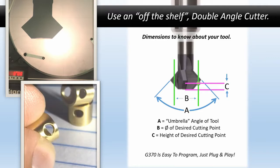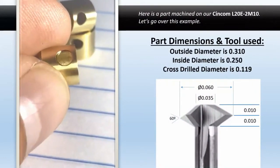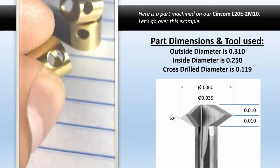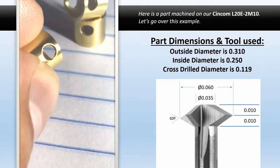G370 is easy to program and just plug and play. Part dimensions and tool used: outside diameter of this part was .310, inside diameter was .250, cross drill diameter was .119. These are all the parameters we had to work with, and we're going to go into great detail showing you how this was used.